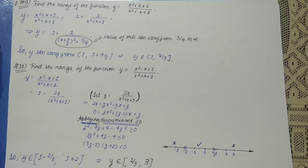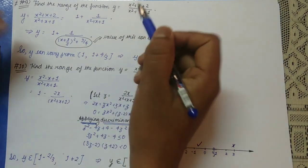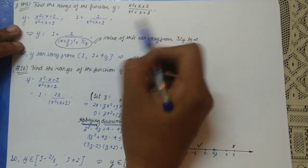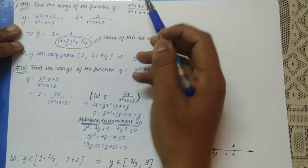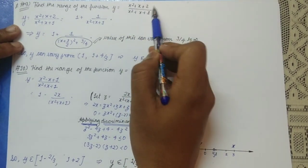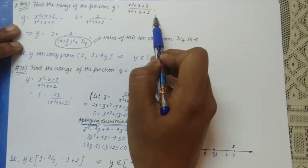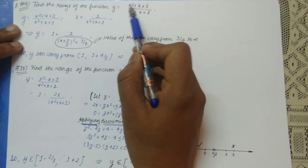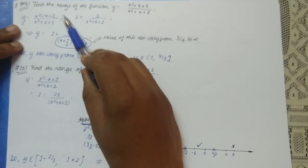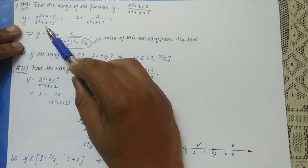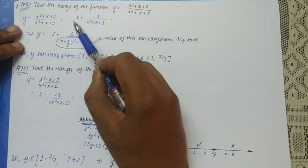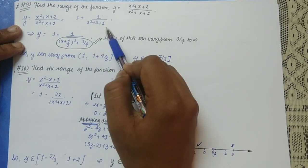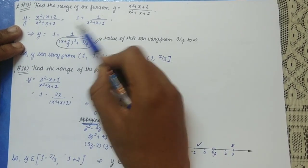The first question is: find the range of the function y = (x² + x + 2) / (x² + x + 1). This expression can be rewritten as 1 + 1/(x² + x + 1).